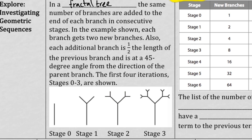The first four iterations — stages 0 through 3 — are shown here. Here's stage 0, stage 1, stage 2, stage 3. We could keep going, but you can tell it's going to get pretty complicated at stage 4 or 5 already.